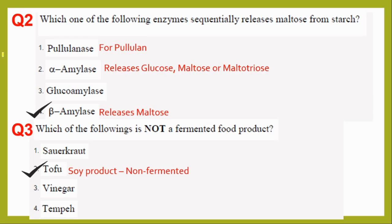Question two asks which enzyme sequentially releases maltose from starch. Starch is a polymer made up of amylose and amylopectin, and various enzymes break it down. The correct answer is beta amylase — it takes out maltose units from the starch.